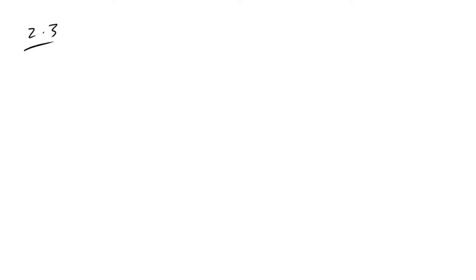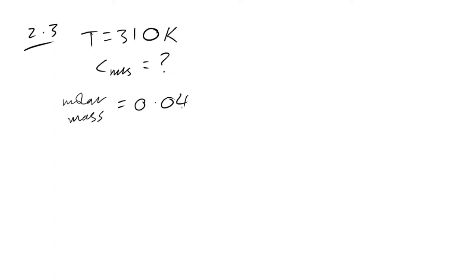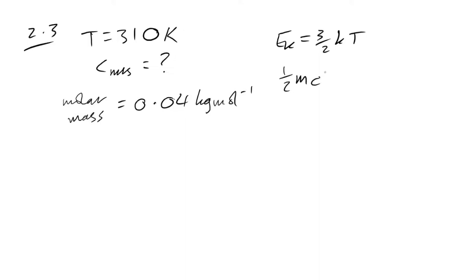Question 2.3: we have a mixture of argon and helium atoms at a temperature of 310 K, and we've been asked to find the RMS speed. The molar mass of argon is 0.04 kg/mol. We saw earlier that Eₖ = (3/2)kT for a molecule.